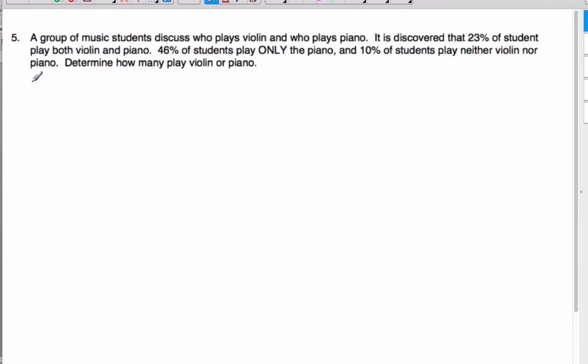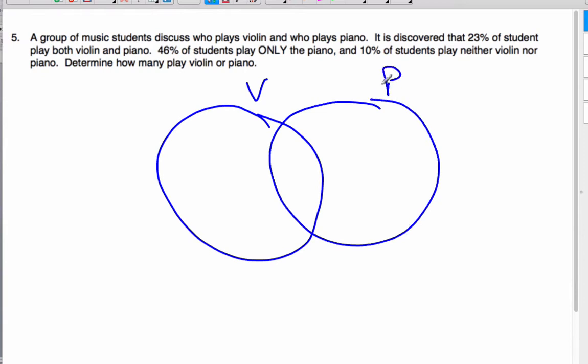Okay. A group of music students discuss who plays violin and who plays piano. So, try this problem on your own, and then check to see if your answer is right. Okay. Here's my violin. Here's my piano. It is a number of 23. Play both violin. Because these are percentages, what I'm going to do is I'm going to assume that they are actually counts out of 100. So, this is really 23 people out of 100. This is only piano, so 46 out of 100. 10 play neither. And so, I know that these values have to add up to 100. So, if I need to find what is just violin, 100 minus 23 minus 46 minus 10, ends up with there are 21 people here. These four numbers add up to a total of 100, which is the percentage.